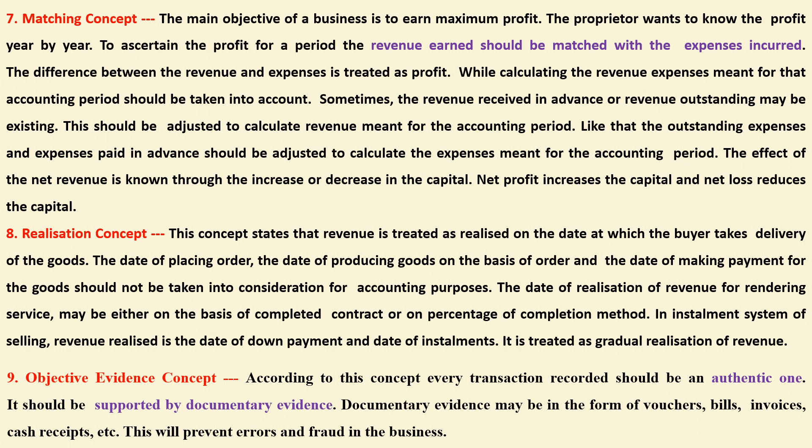The ninth one is objective evidence concept. According to this concept, every transaction recorded should be an authentic one — it should be supported by documentary evidence. Documentary evidence may be in the form of vouchers, bills, invoices, cash receipts, etc. This will prevent errors and fraud in the business. Thank you.